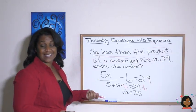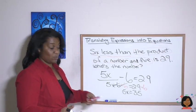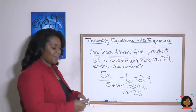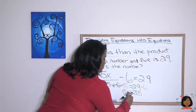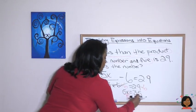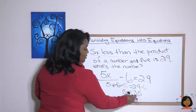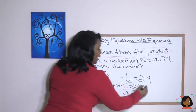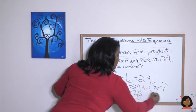To get rid of the five next to the X, we have to do the opposite. So instead of multiplying, we're going to divide it by five. So this side by five and this side by five. That leaves us with X equals seven.